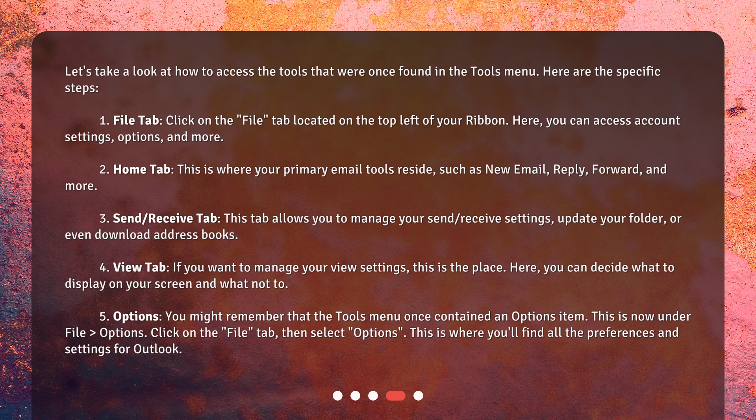2. Home tab: This is where your primary email tools reside, such as new email, reply, forward, and more. 3. Send/Receive tab: This tab allows you to manage your send and receive settings, update your folder, or even download address books.